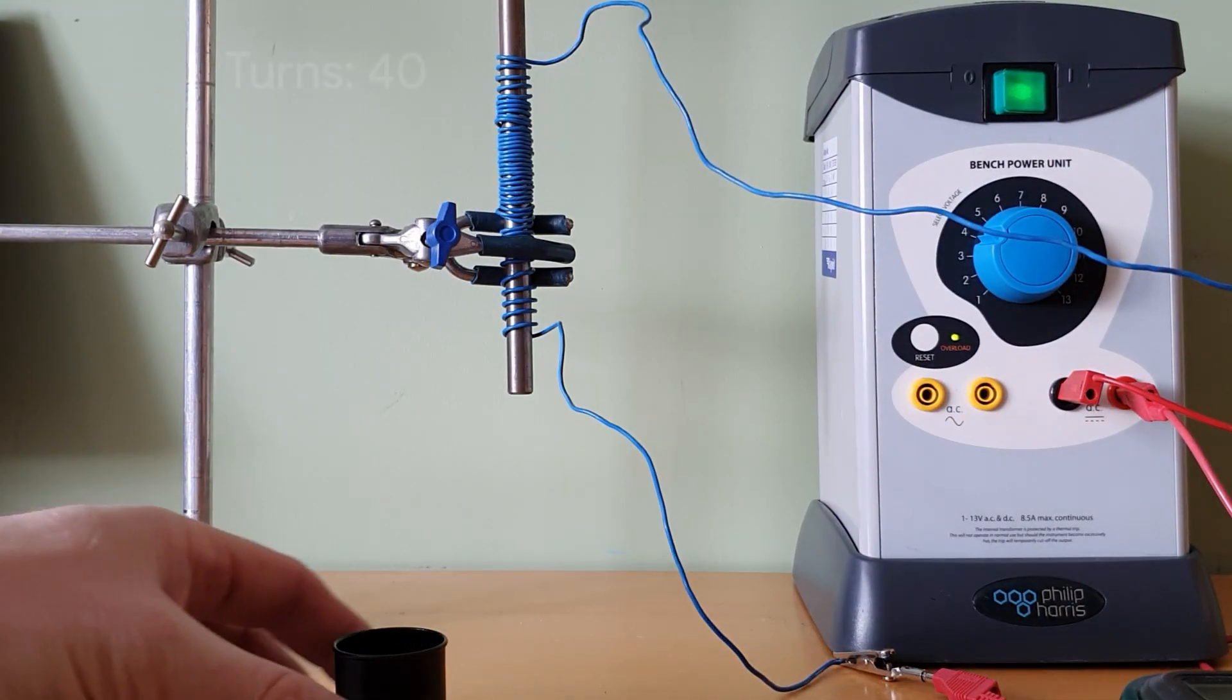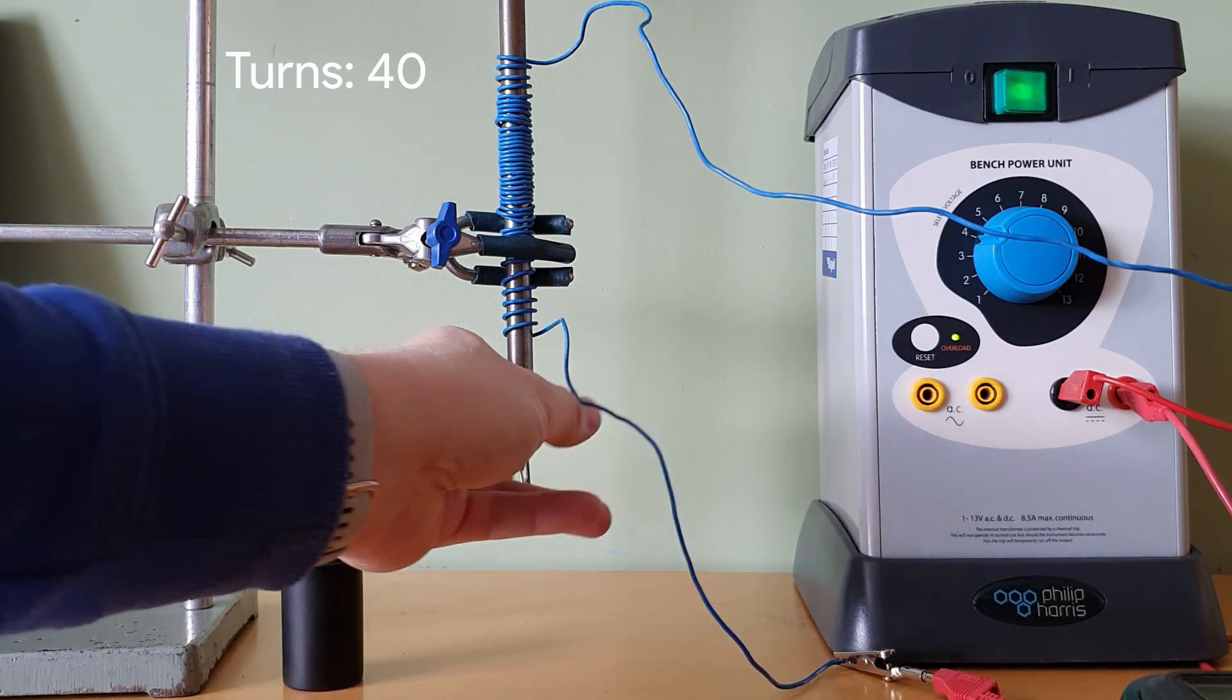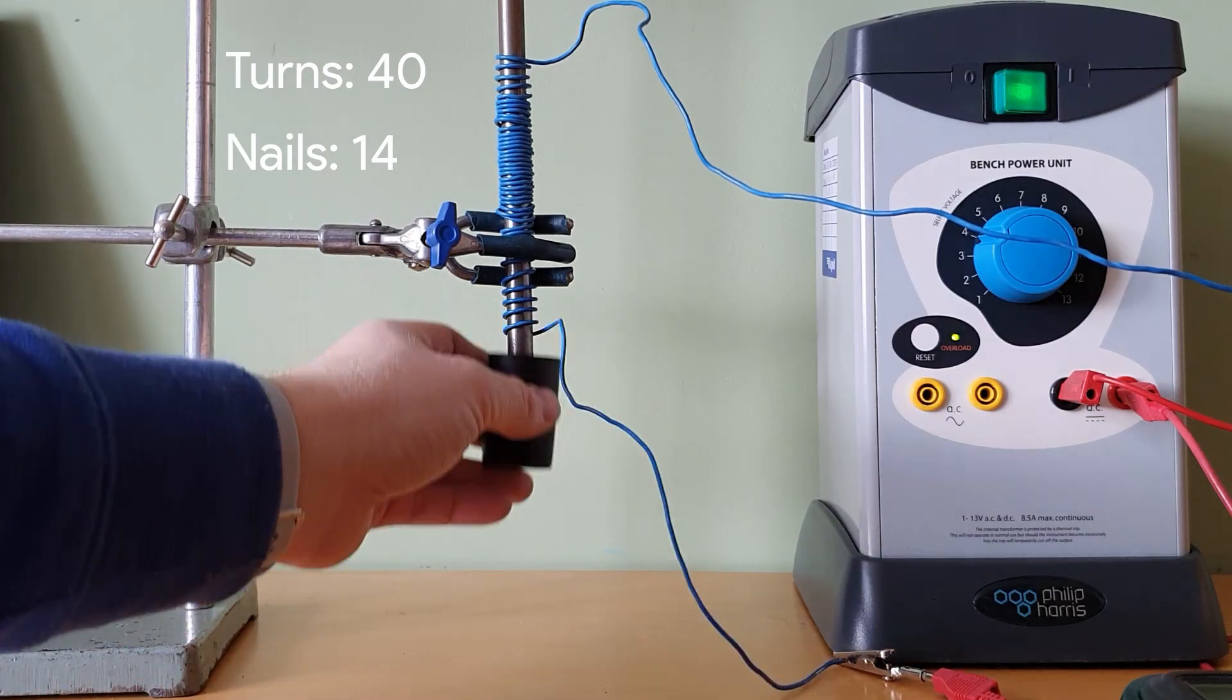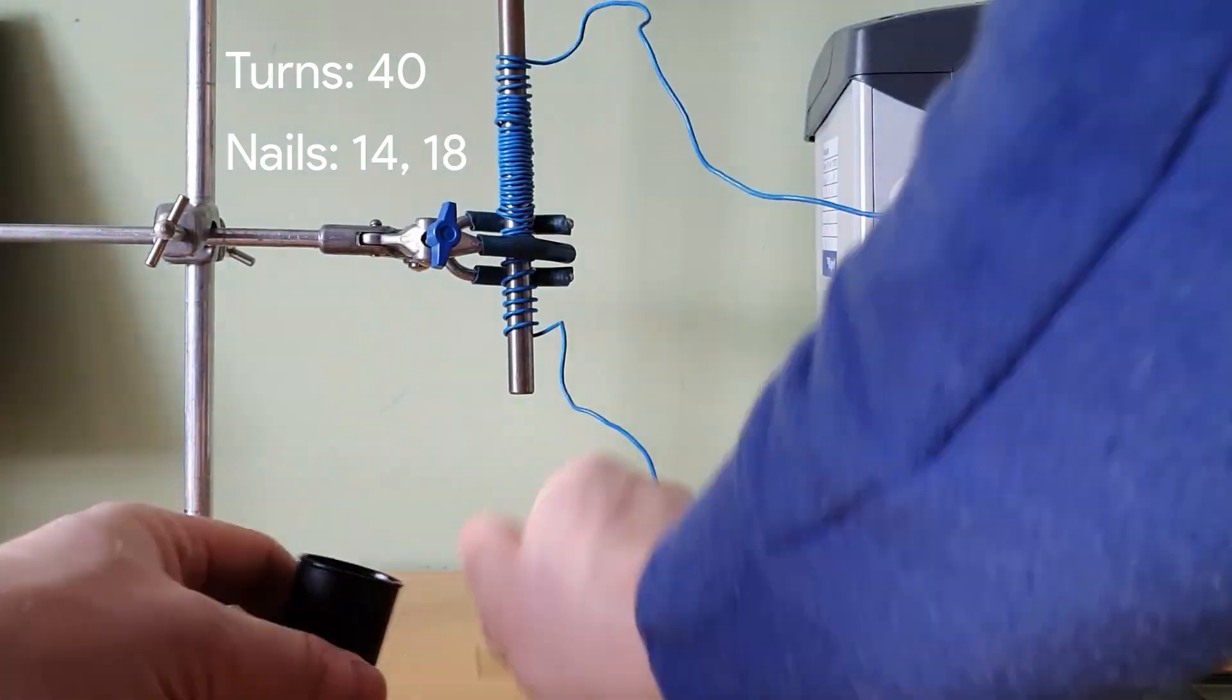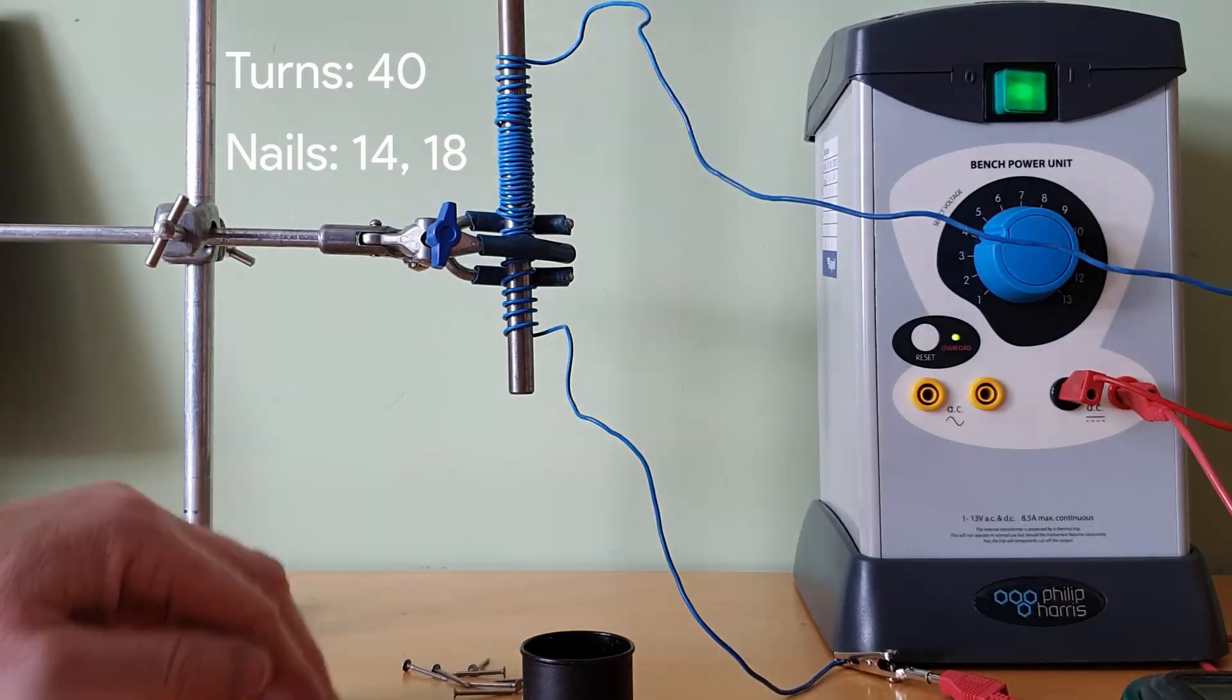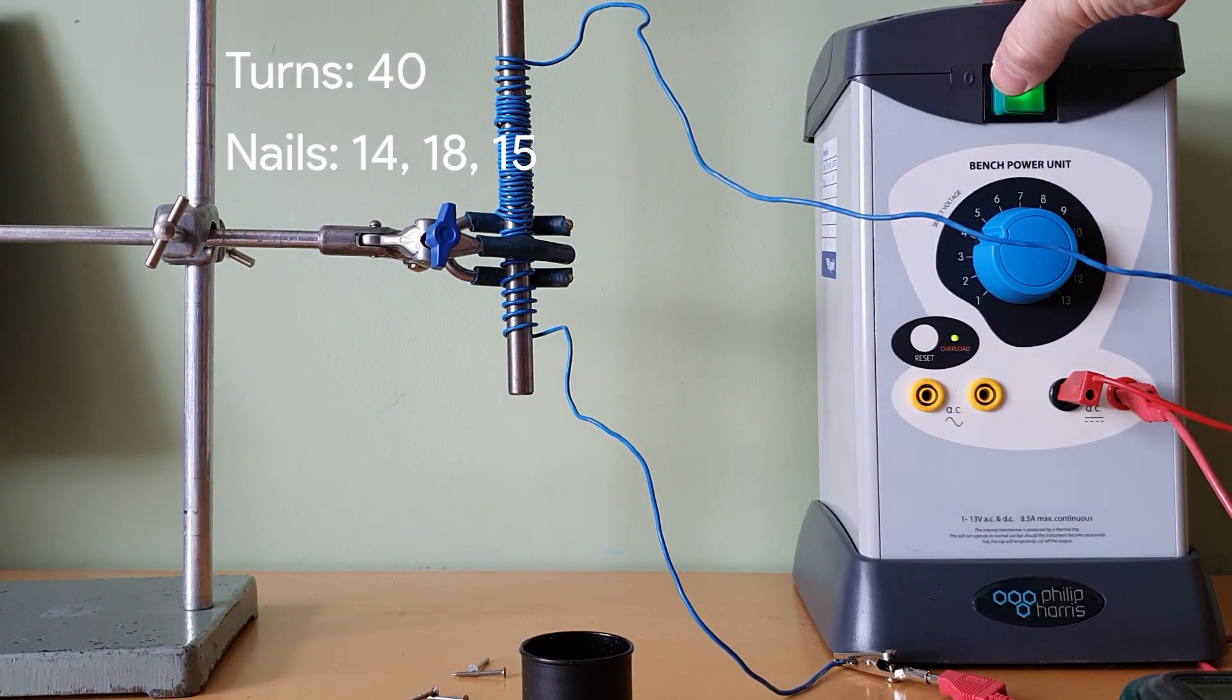Now we have 40 turns. One, two, three, four, five, six, seven, eight, nine, ten, eleven, twelve, thirteen, fourteen. Eighteen. So 14 and 18. Fifteen. So 14, 18, and 15.